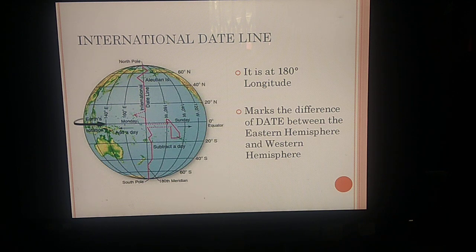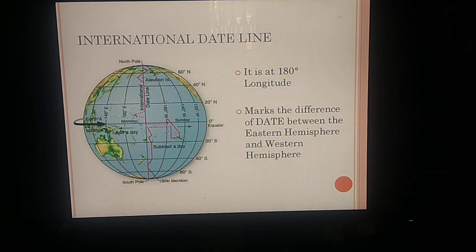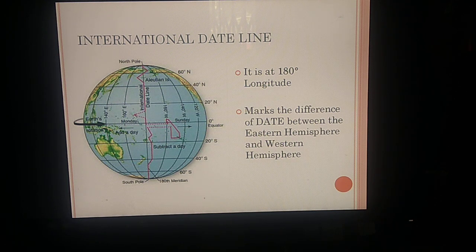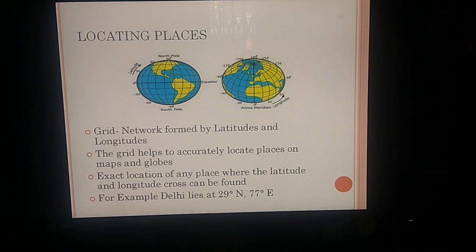Another important meridian is the International Date Line at 180 degrees longitude. The International Date Line marks the difference of date between the eastern and western hemispheres. There is a time difference between each longitude of four minutes — so the difference in time between every consecutive longitude is four minutes.